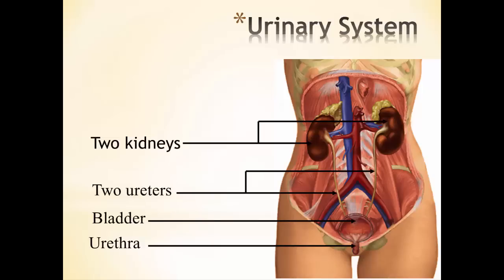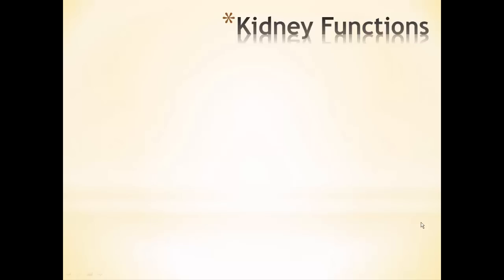The urinary system is made up of two kidneys, two ureters that take the urine from the kidneys down to the bladder, and then finally it'll travel through the urethra.